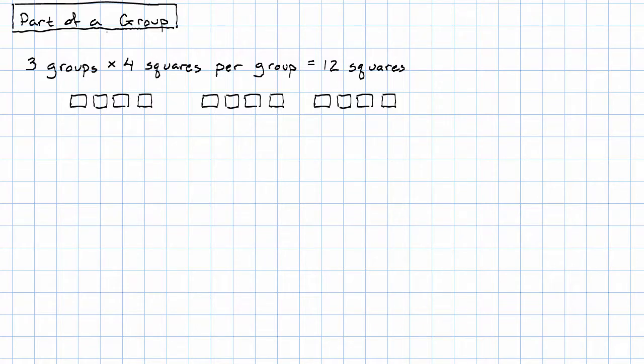What if instead of taking three groups, we only wanted to take part of a group? So perhaps we want to say two thirds of a group times 18 squares per group. What would that work out to be?